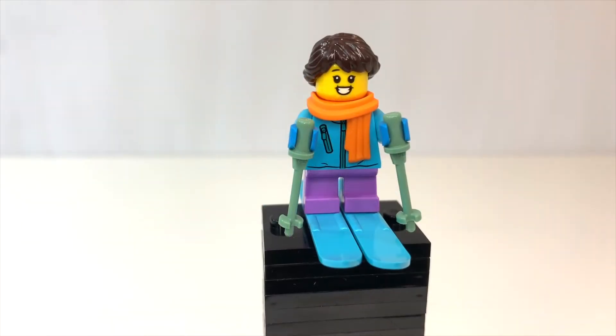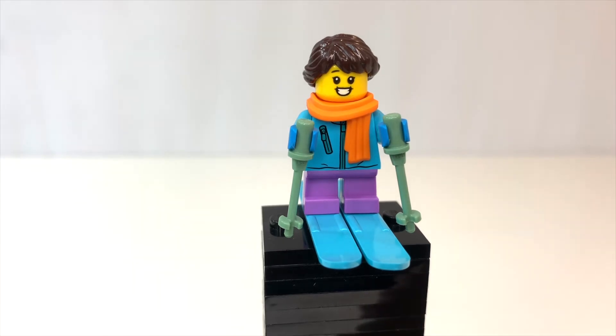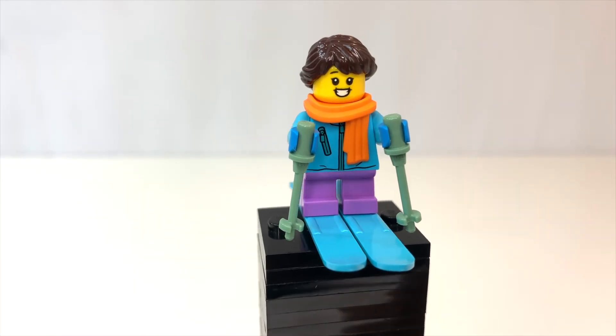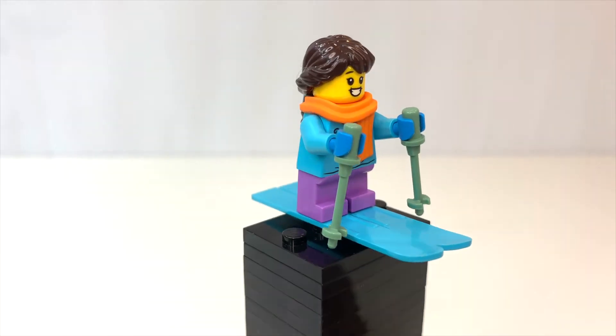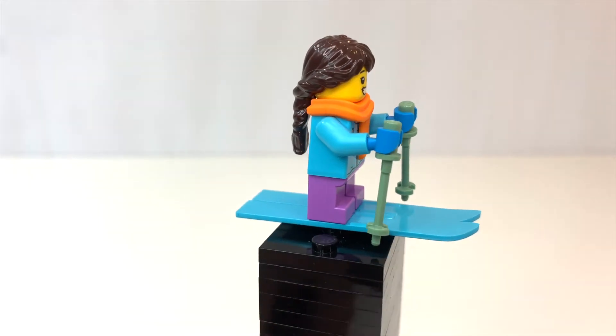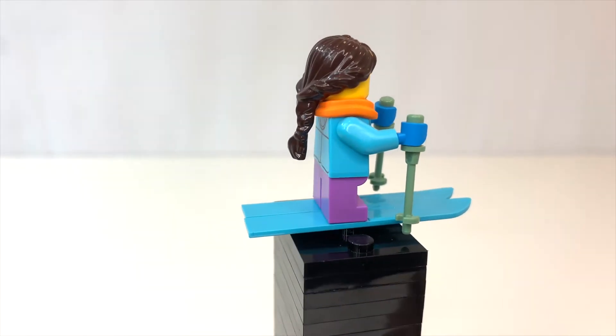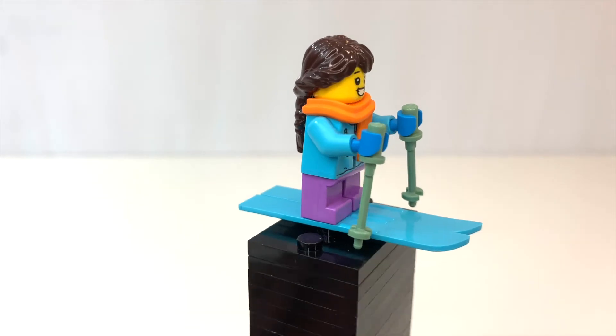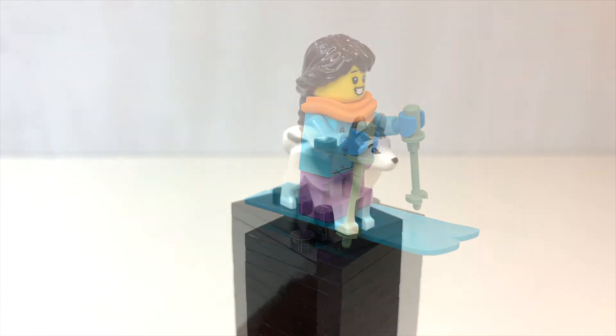And she does come outfitted with skis and ski poles, which is really nice to see because I love that color of ski. It matches her torso perfectly, and the ski poles are returning in sand green from the Harry Potter line, which I always love to see those pieces.